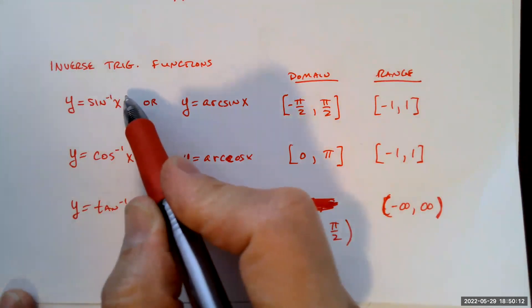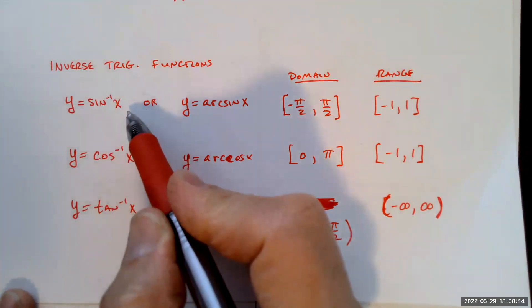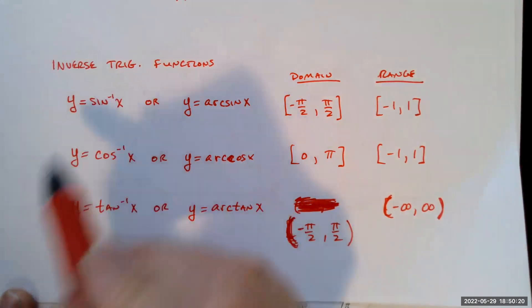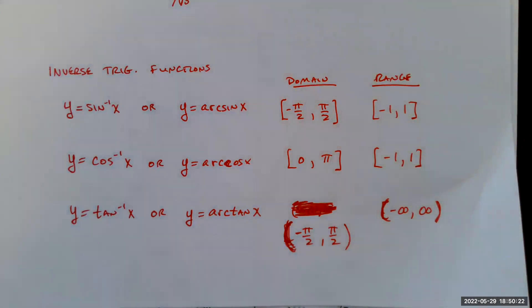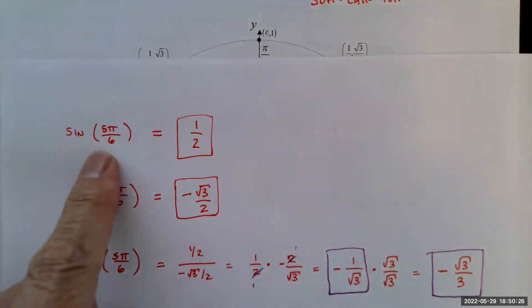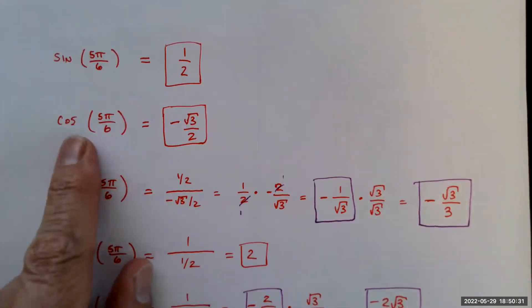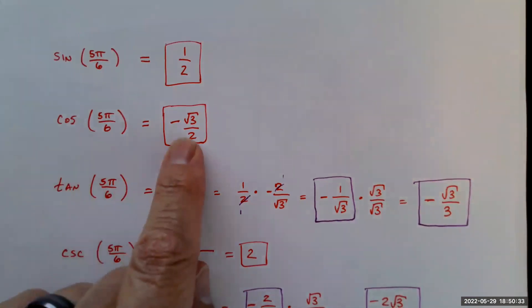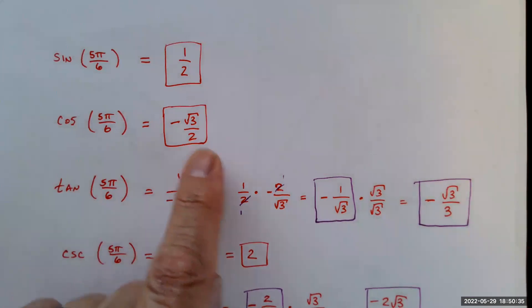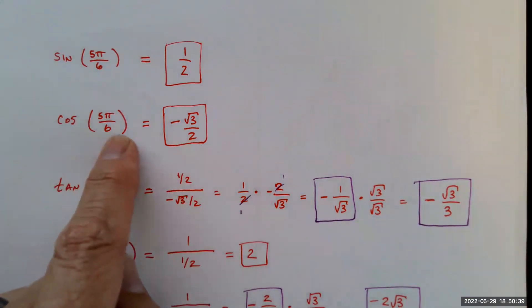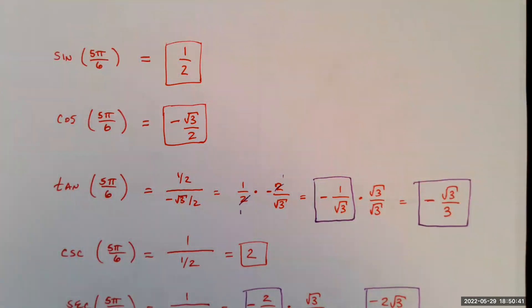Sin⁻¹(x) is not 1/sin(x), which would be cosecant x. This is the inverse function — it undoes the sine function. For instance, if cosine of 5π/6 equals negative √3/2, then the inverse cosine of negative √3/2 equals 5π/6.